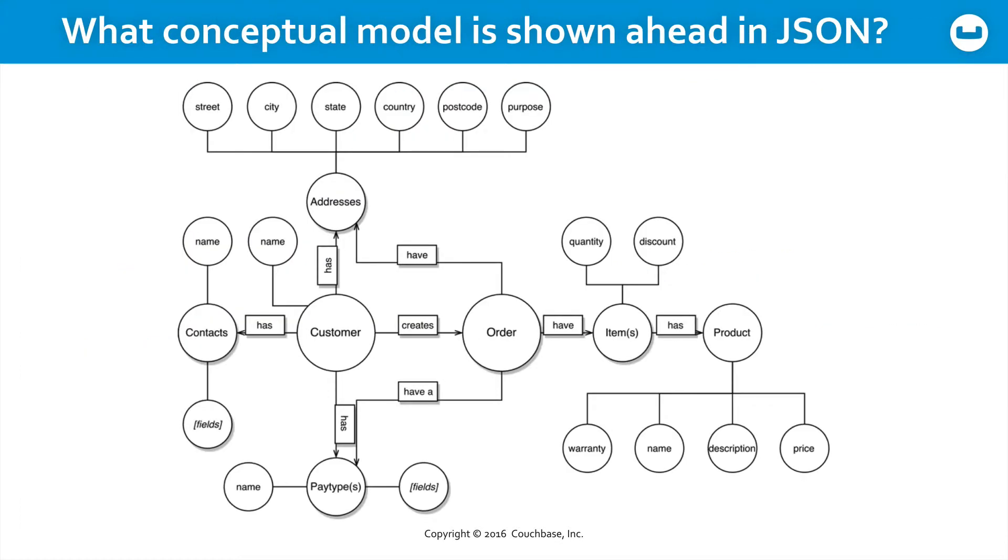So, in this course, we're working with a conceptual model for an application we call Couch Gadget, a very simple ordering system to buy gadgets, and it involves a customer that creates an order. The customer has contacts and addresses and pay types, but the order itself may have multiple addresses for shipping. It also has a pay type, one of the available customer pay types for that particular order, but the order also has one or more items, and each item has a product, but it also needs to have locally within the order the quantity and discount related to a particular item being ordered. So, where are the entities in this diagram?